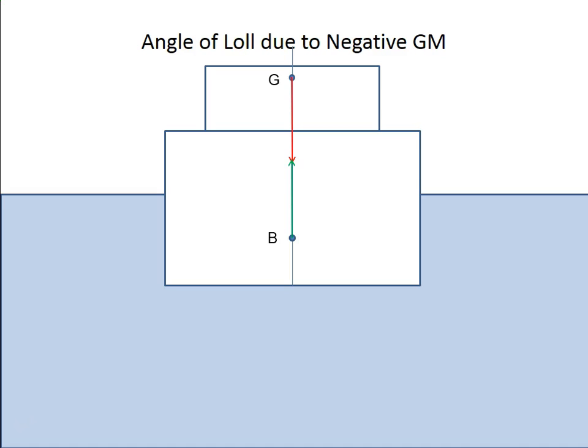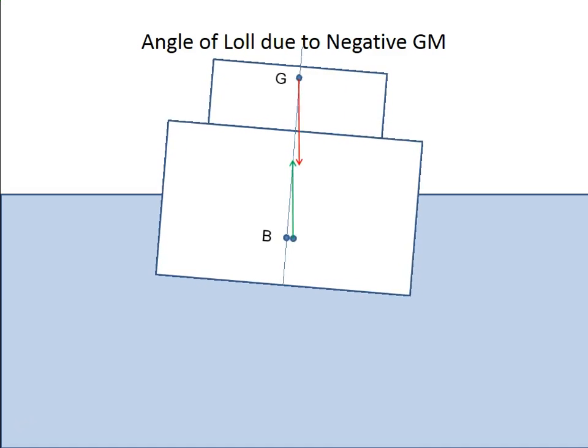So this vessel, actually, is not going to want to stay in the upright position. It does not have any initial stability. If it's acted on by any external force, it's going to immediately incline on its own to one side or the other. So let's say we applied a force on the port side. It could be a wave. It could be a tugboat pushing up against the vessel. As soon as we do that, something interesting is going to happen.